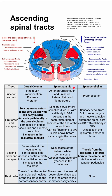Next, let's do the spinothalamic tract. The function here is crude touch and pressure as well as pain and temperature. It can be divided into anterior and lateral segments, where anterior is crude touch and pressure and lateral is pain and temperature. The first order neuron has a nerve that enters the spinal cord via the dorsal root with a cell body in the dorsal root ganglion. It ascends in the posterolateral tract located at the tips of the dorsal horns, carrying fibers one or two levels above before synapsing in the dorsal horn. The second order neuron decussates at the anterior white commissure, ascends contralaterally, and synapses in the thalamus. The third order neuron travels from the ventral posterior lateral nucleus of the thalamus to the somatosensory cortex.